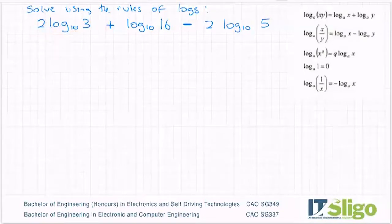So how do I do that? Well, I use the q rule here. You see when there's a number in front of the log, I can write it as log to the base a of x to the power of q. So that becomes a power. In other words, this one would become log to the base 10 of 3 squared.